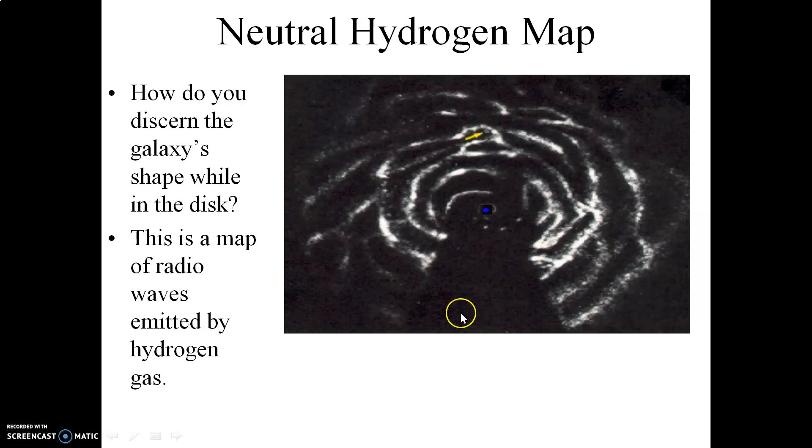We can't see any of the energy that's being emitted on this side here of the diagram or on this side of the map because basically all of this material is in the way. There's basically a shadow here. However, when we do map out the radio waves emitted by neutral hydrogen gas, we then end up with this map right here outlining the spiral structure of the Milky Way.